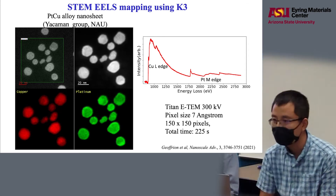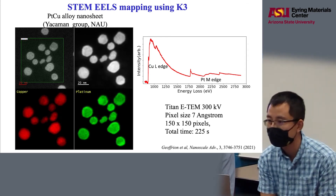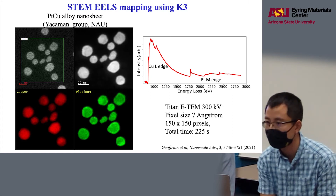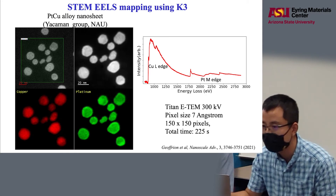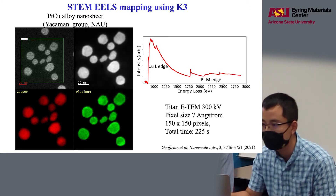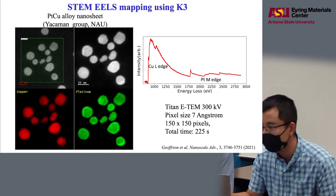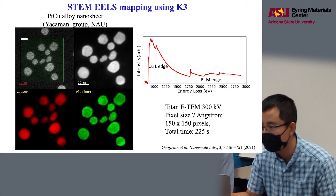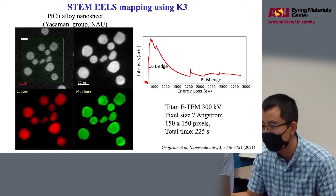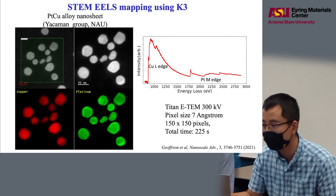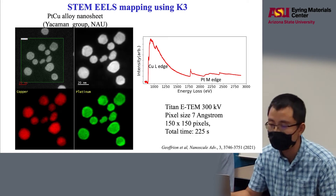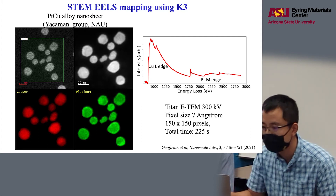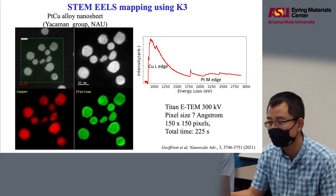Now I will introduce some other examples. Here is one example where we use the K3 detector to do quick STEM EELS mapping. This is a platinum-copper alloy nanosheet from Erman Group at NAU. We operate the microscope at 300 kV. One example spectrum from the sample clearly shows the copper L edge and the platinum M edge. With a pixel size of 7 angstroms and a pixel array of 150 pixels, we got the data in about 200 seconds, showing the distribution of copper and platinum. Platinum is very heavy, so it is usually only doable for EDX, but with the new detector and spectrometer, we can do it with EELS.